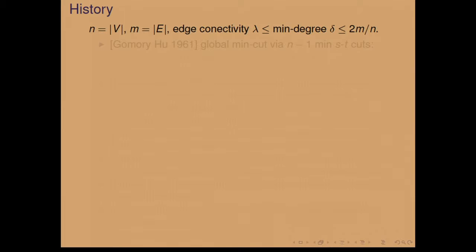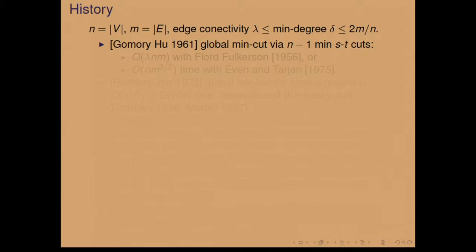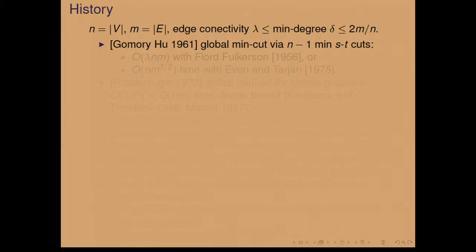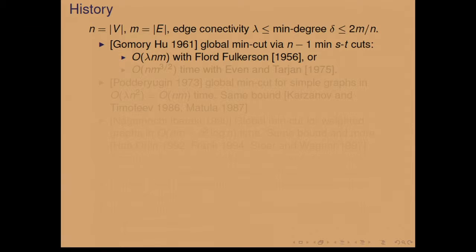We have n vertices, m edges, and edge connectivity lambda, which is at most the minimal degree, since we always have cuts achieved by taking out a single vertex — which by averaging is at most 2m divided by n. It goes all the way back to 1961 that Gomory and Hu discovered you can solve the global min-cut by n minus 1 minimum ST cuts: you take an arbitrary source, and you find a vertex on the other side — which could be any of the n minus 1 other vertices.